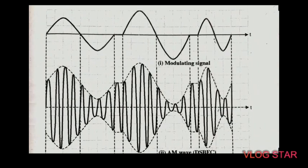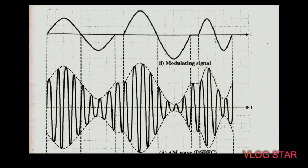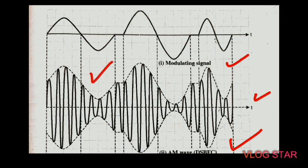Now we will see the waveform of double sideband full carrier system. The modulating signal is called the information signal or baseband signal, and the second is the carrier signal. For the AM wave, the amplitude of the carrier signal changes in accordance with the modulating signal. That's why we can see the AM waveform where the amplitude of the carrier signal is changed according to the modulating signal. This wave is also known as double sideband full carrier wave.